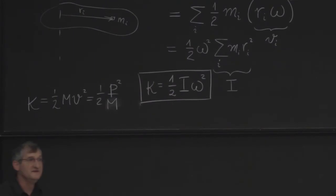Sometimes it was more convenient to use p squared over 2m, particularly in a problem where momentum was conserved. So we might as well develop the rotational analog.